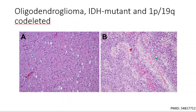Oligodendroglioma IDH mutant and 1p/19q codeleted: WHO grade 2 oligodendroglioma is composed of infiltrating tumor cells with monomorphic round to oval nuclei with perinuclear halos shown in panel A. WHO grade 3 variants exhibit more dense cellularity and proliferative activity and may contain microvascular proliferation shown in panel B, as well as necrosis shown by the arrowhead in green.